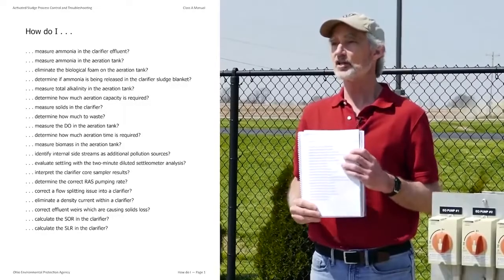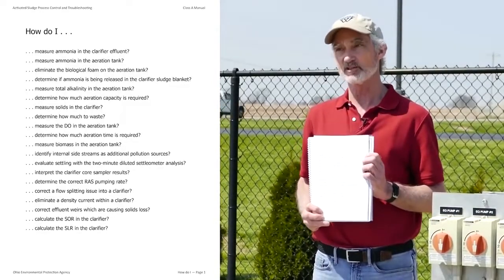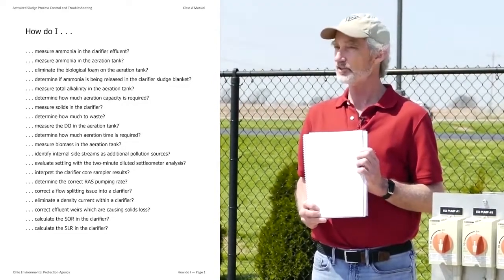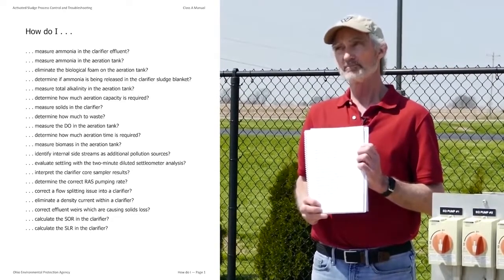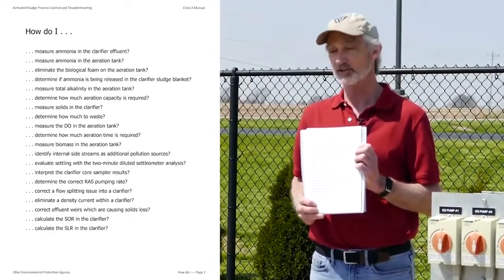Each box on the flowchart has a number, and each number corresponds to a page in the process control manual. Each page will tell you the reason why you're doing this. It will give you a process or a piece of data to collect, and if it does give you a piece of data to collect, you can go to the 'how do I' page, which tells you how to do every test that's in the manual. So it's really a very good manual for small mechanical treatment systems.